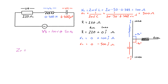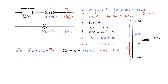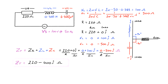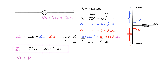To find the total impedance, because it's a series circuit we just add the impedances: ZR + ZL + ZC. We've got (220 + 0j) plus (0 + 100j) plus (0 − 500j). Adding the real parts together and the imaginary parts together, the total impedance is 220 − 400j ohms.